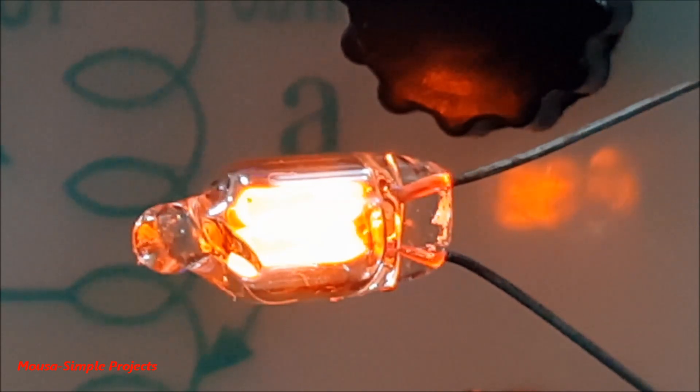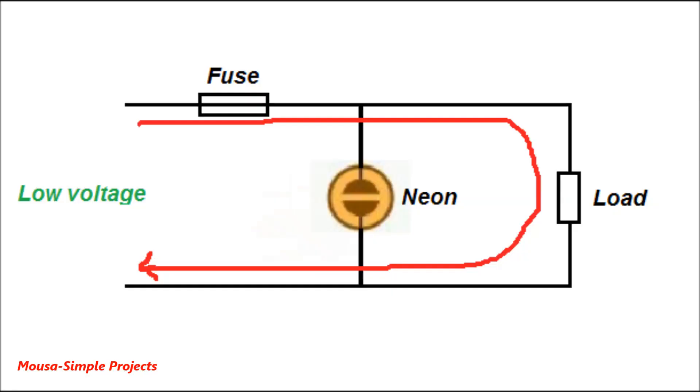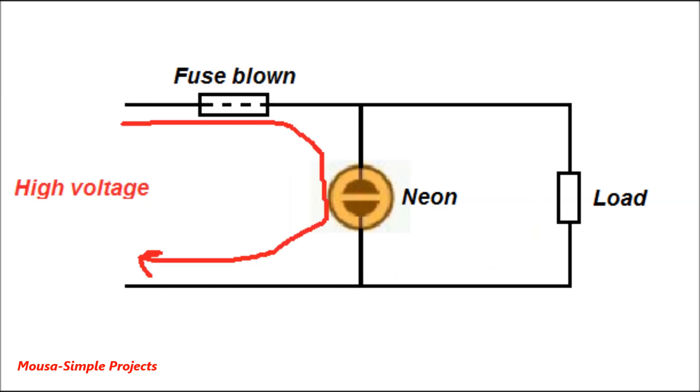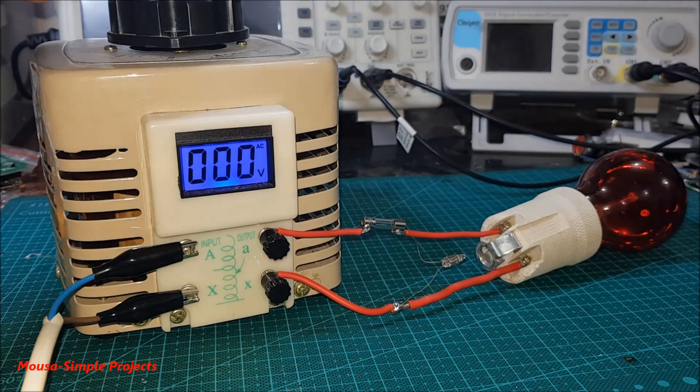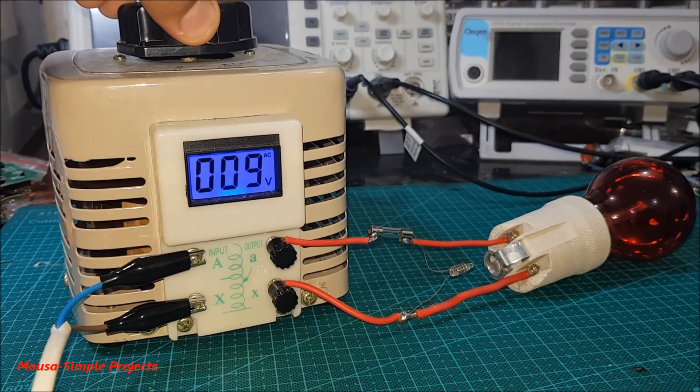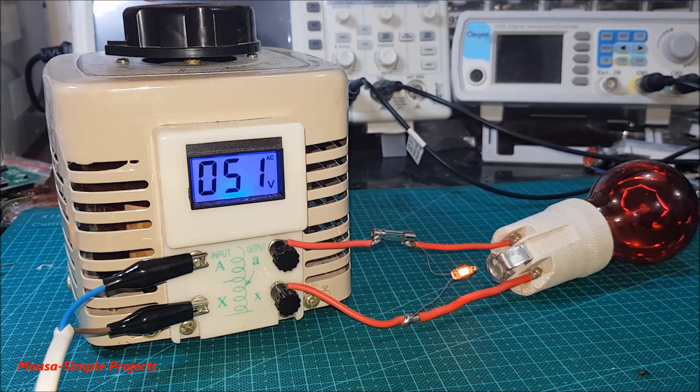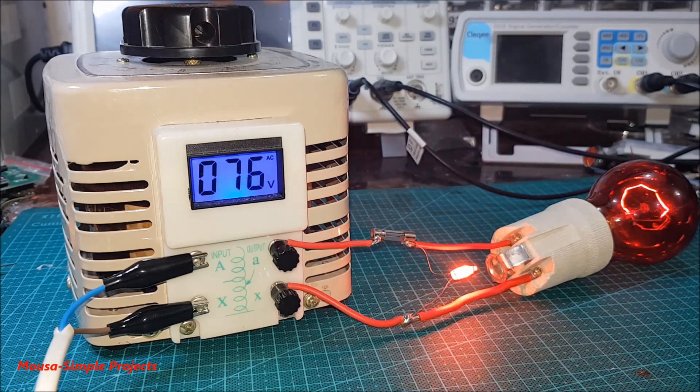If I use this neon lamp without current limiting resistor, it can draw high current when the voltage increases more than breakdown voltage. This property makes it suitable for over-voltage protection circuits. Here I put a 3A fuse before the neon lamp. When the voltage increases more than a certain value, the neon lamp becomes conductive and the fuse blows out. As you can see here.